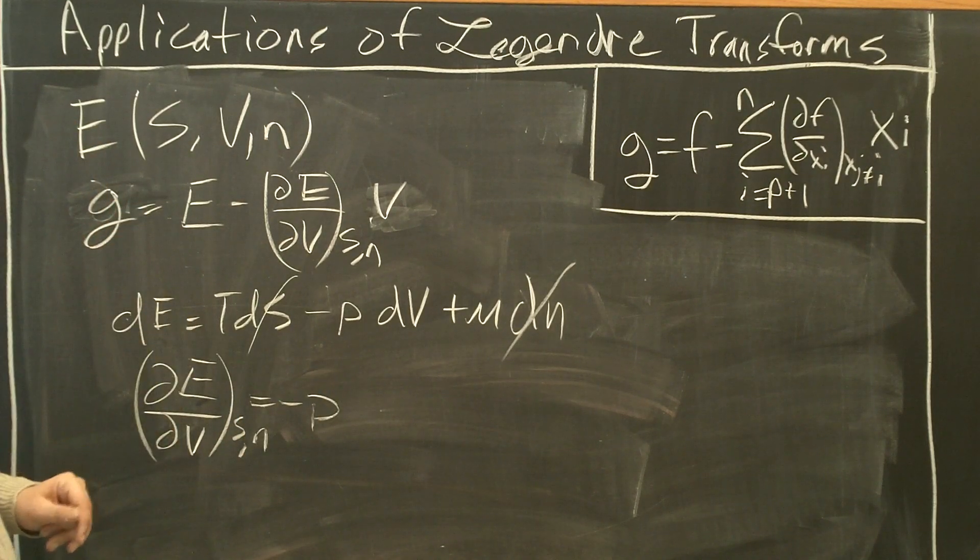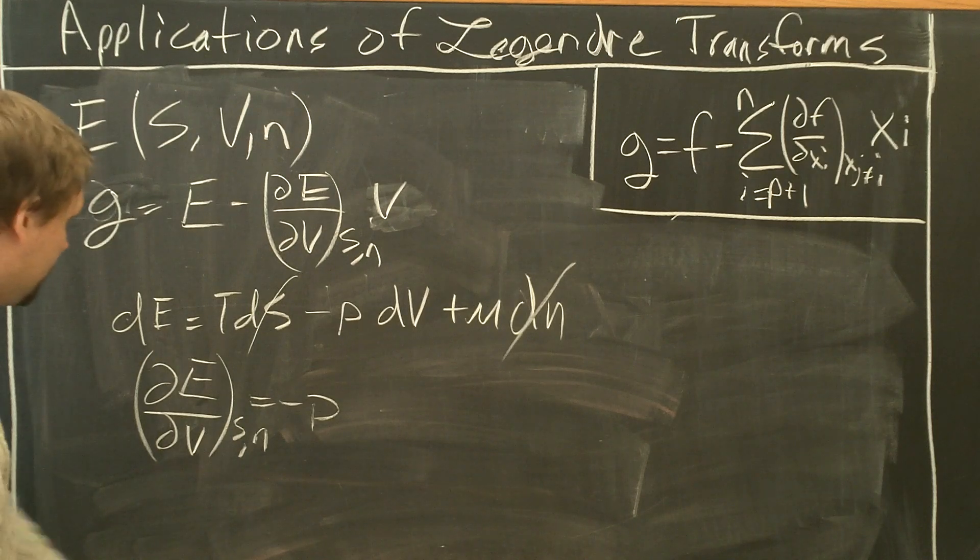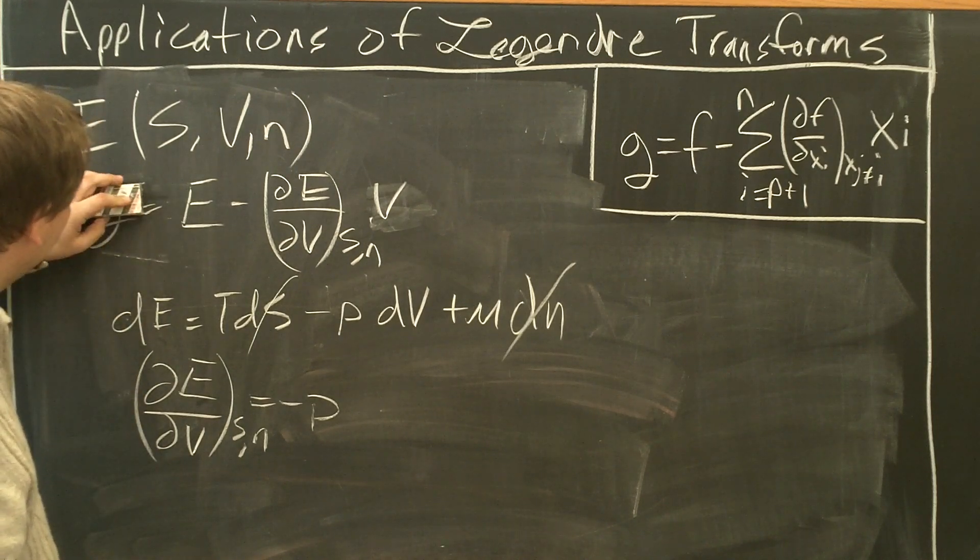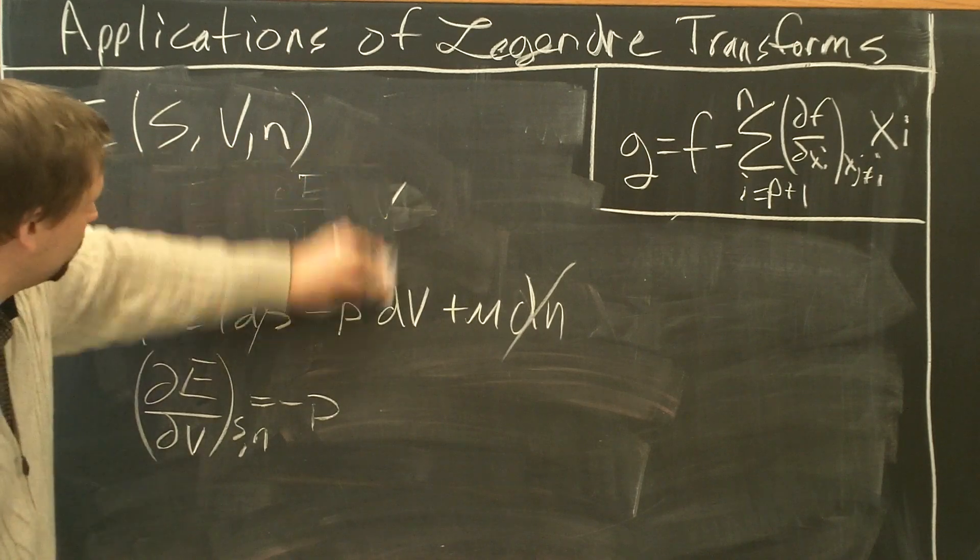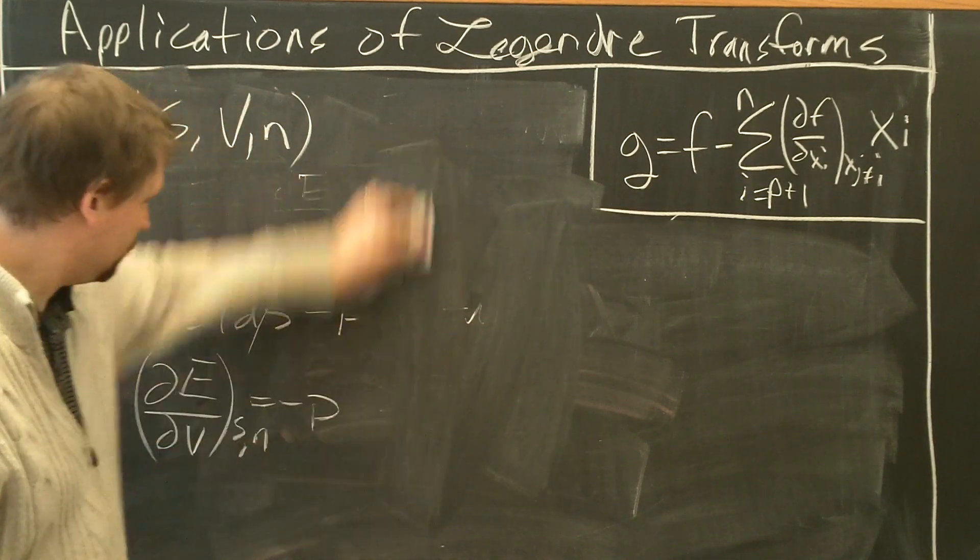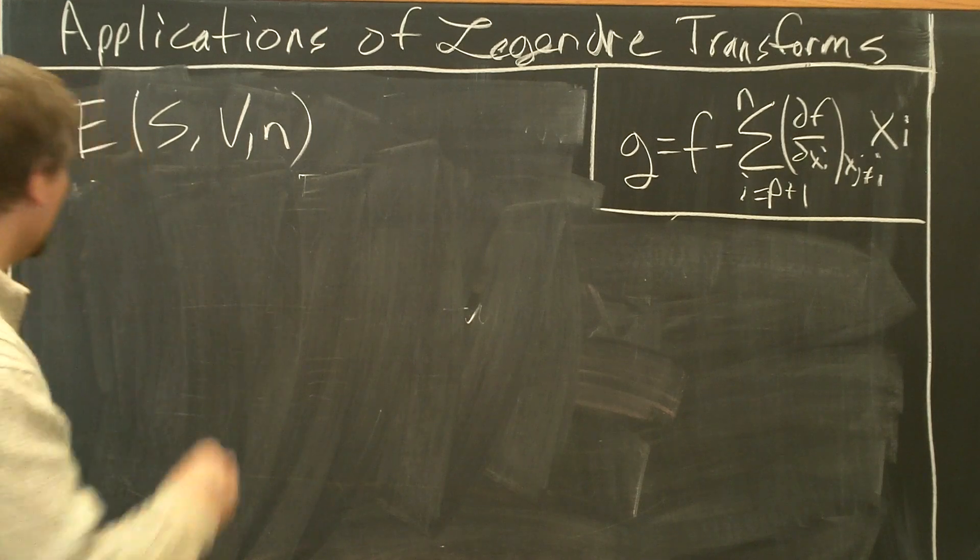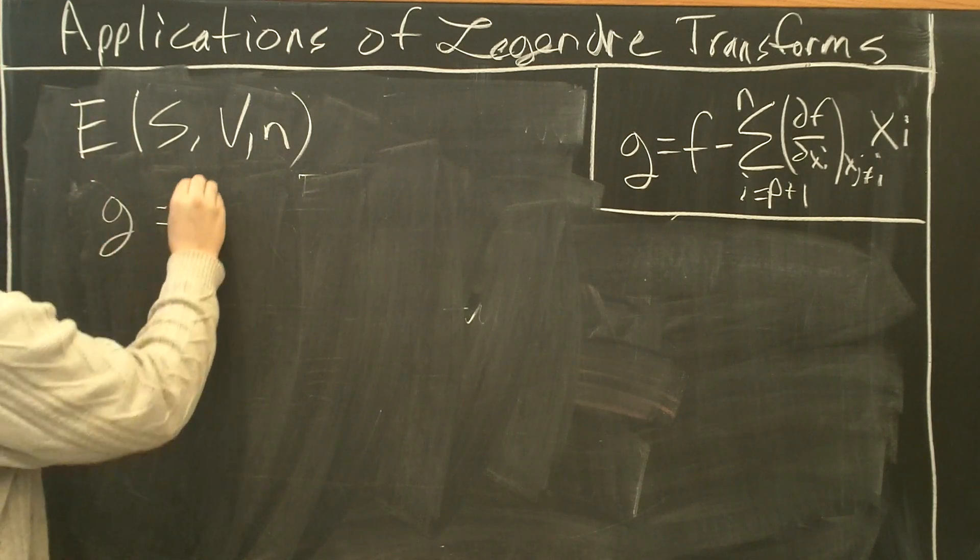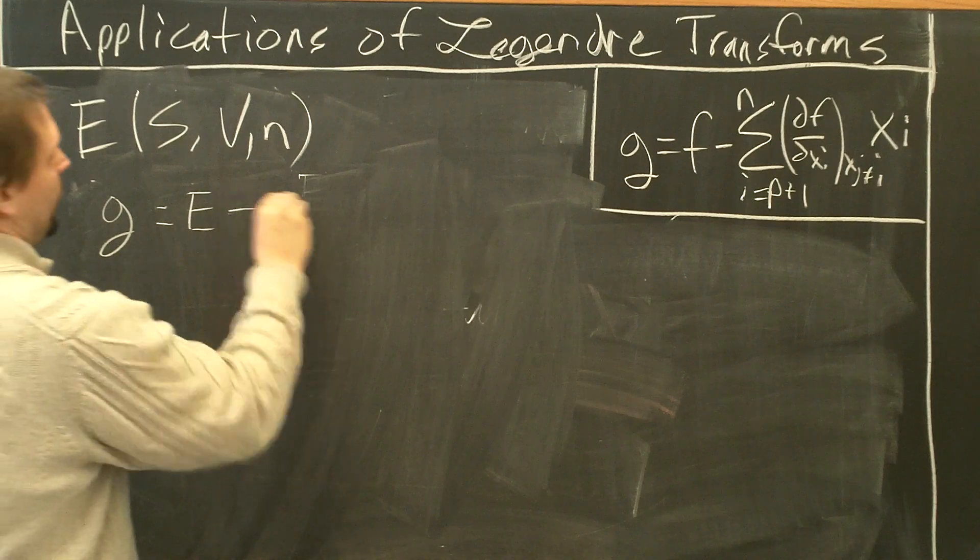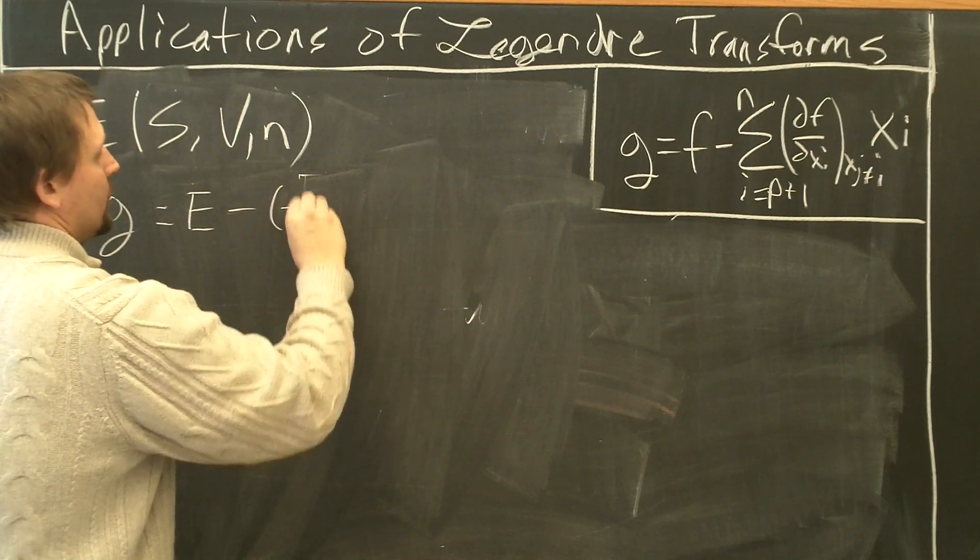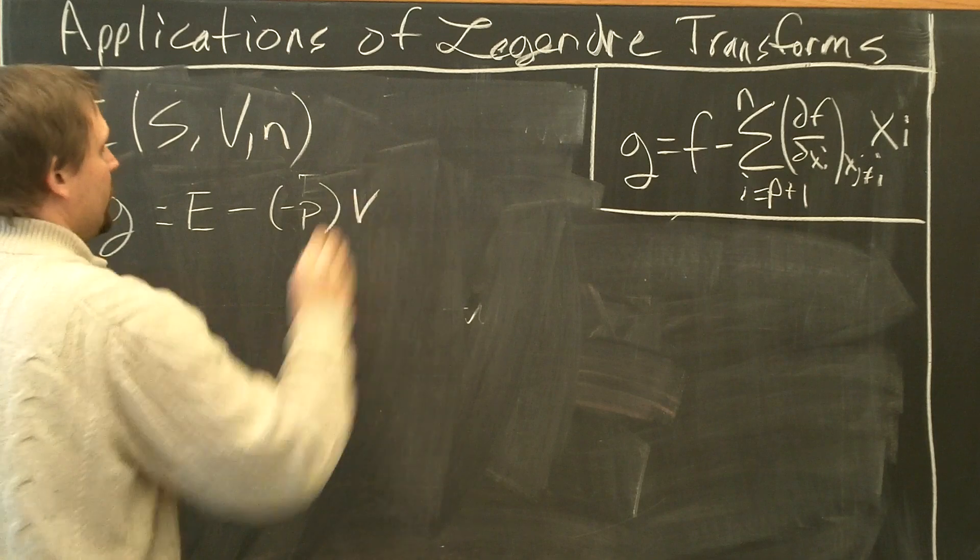So plug this back into the equation and see what we get. G equals E minus minus P times V.